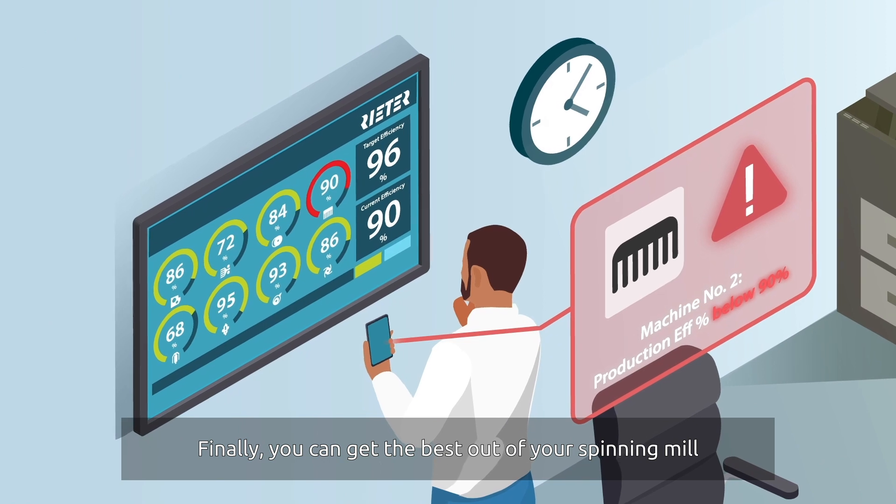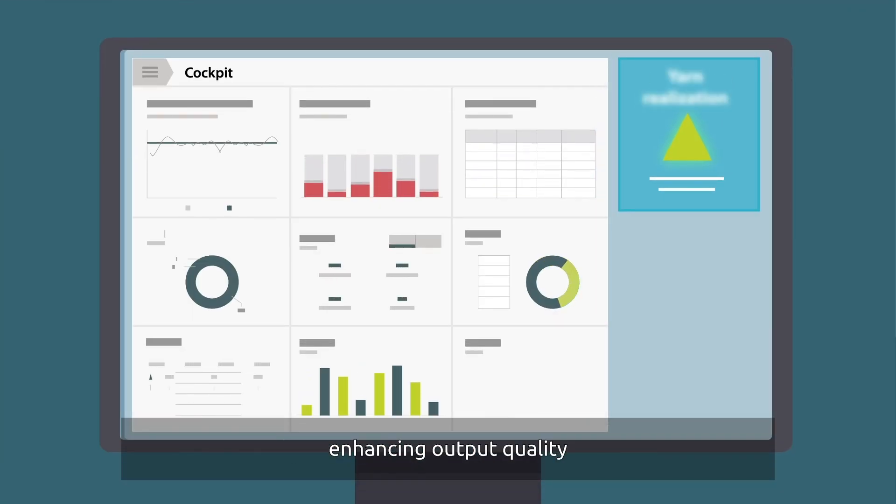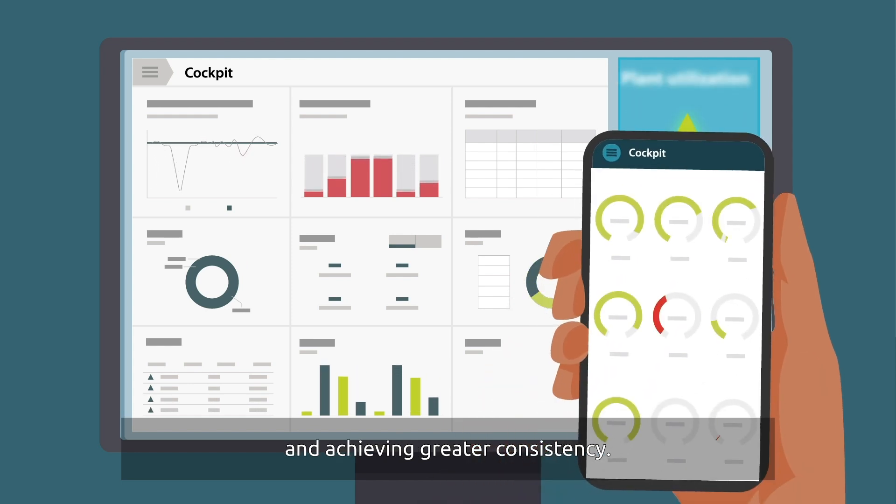Finally, you can get the best out of your spinning mill by improving machine productivity, enhancing output quality and achieving greater consistency.